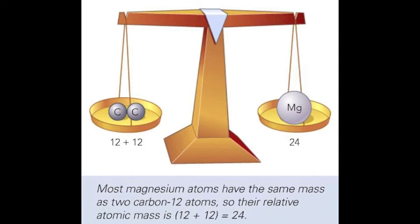For example, the mass of a helium-4 atom is one-third that of a carbon-12 atom, so its relative atomic mass is 4. In the pictured example, the mass of a magnesium atom is exactly twice that of a carbon atom, so the magnesium atom has a relative atomic mass of 24.